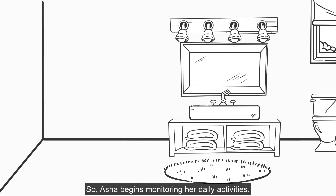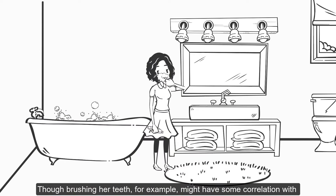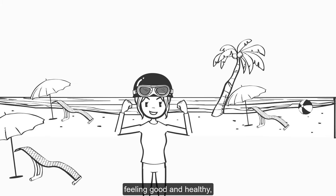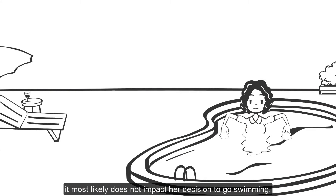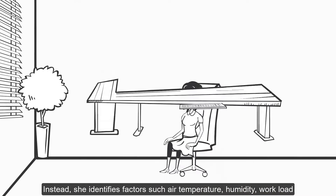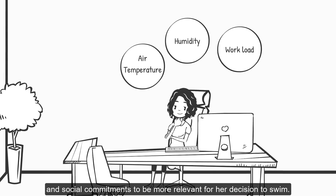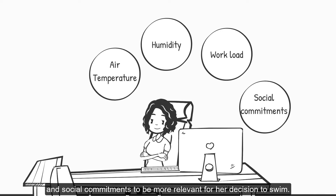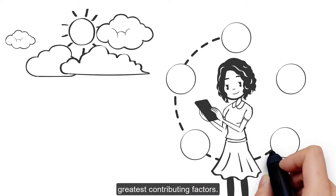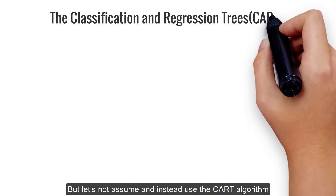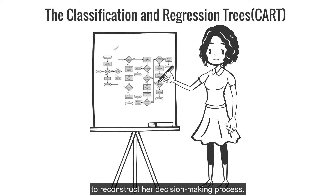Asha begins monitoring her daily activities. Though brushing her teeth, for example, might have some correlation with feeling good and healthy, it most likely does not impact her decision to go swimming. Instead, she identifies factors such as air temperature, humidity, workload, and social commitments to be more relevant. Asha believes weather and social commitments are the greatest contributing factors, but instead of assuming, we use the CART algorithm to reconstruct her decision-making process.